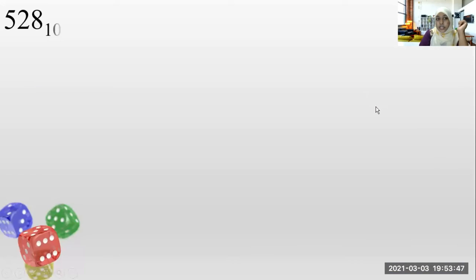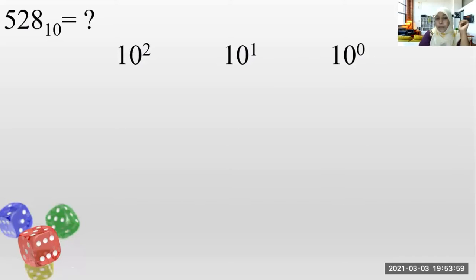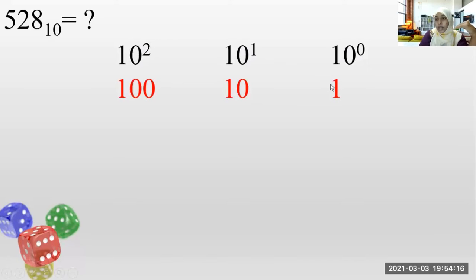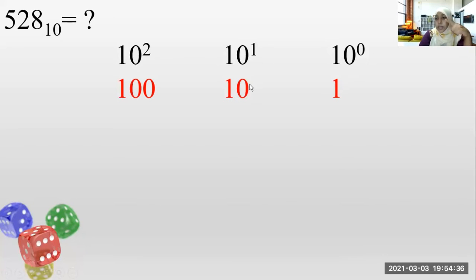The next question: expand the decimal numbers. How to expand a decimal number — first, take the powers of 10. 10 to the power 0, 10 to the power 1, 10 to the power 2. 10 to the power 0 is always 1 — whatever the number, anything to the power 0 is 1. 10 to the power 1 is 10. 10 to the power 2 means 10 times 10, which is 100.